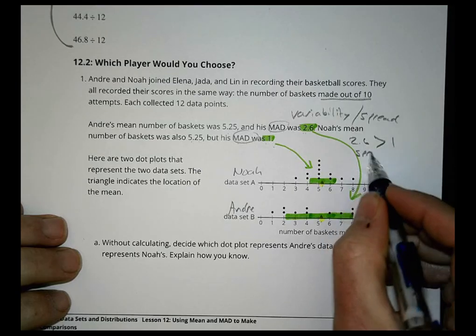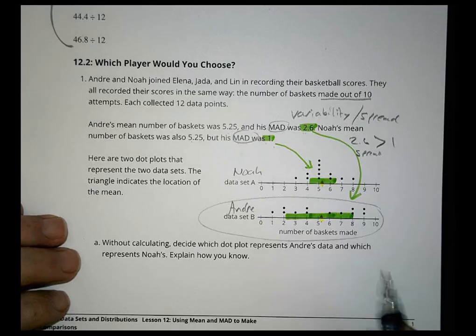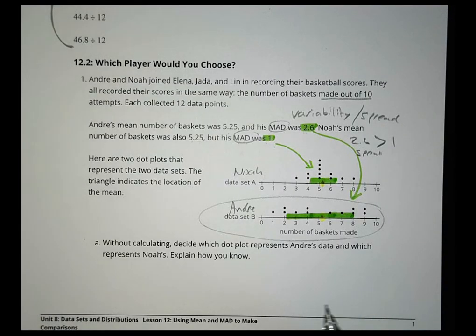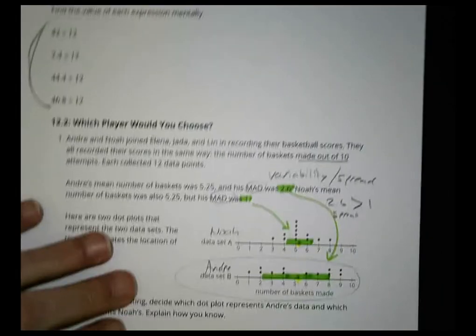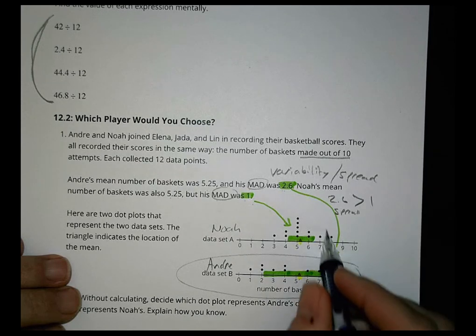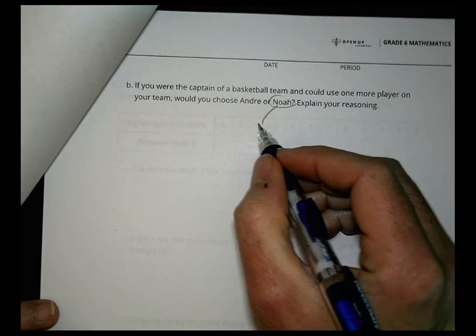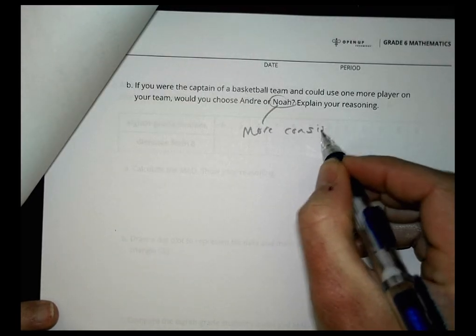2.6 is greater than 1, so Andre's data has a larger spread, and we can see that on his dot plot. So the question for part B says: if you're captain of the basketball team and can only use one more player, who would you choose? They have the same average, the same mean, but the one who's more consistent is Noah. I would go with Noah on my team because he's more consistent.